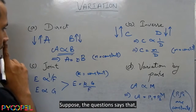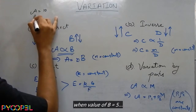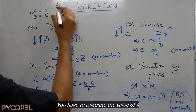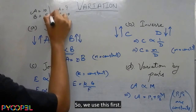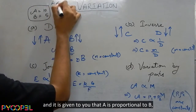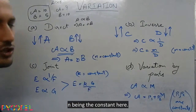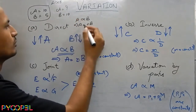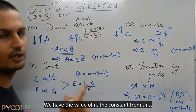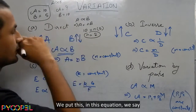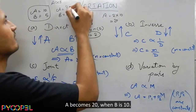Suppose the question says the value of A is equal to 10 when the value of B is equal to 5, and you have to calculate the value of A when the value of B is 10. It is given that A is proportional to B, so A = NB where N is a constant. Substituting, 10 = N × 5, so N = 2. We then put this into the equation: A = 2 × 10 = 20. So A becomes 20 when B equals 10.